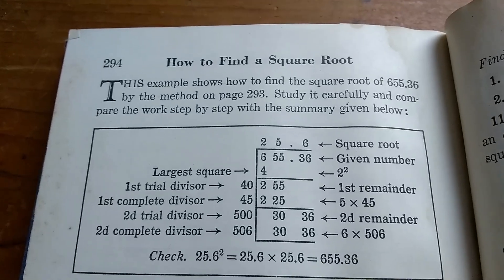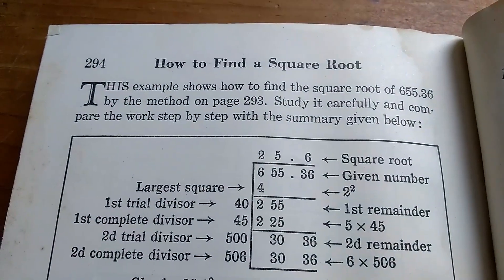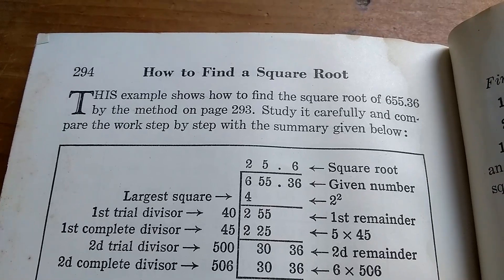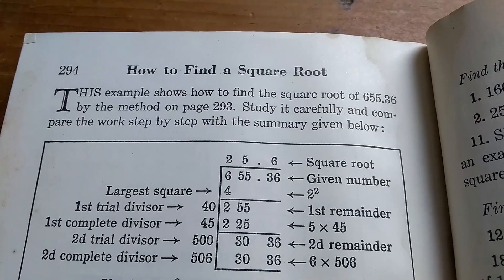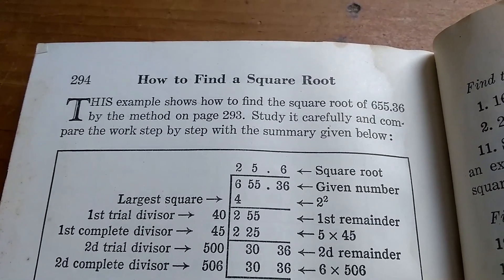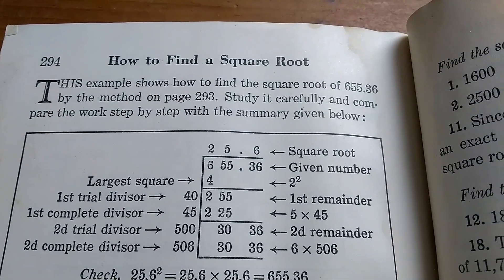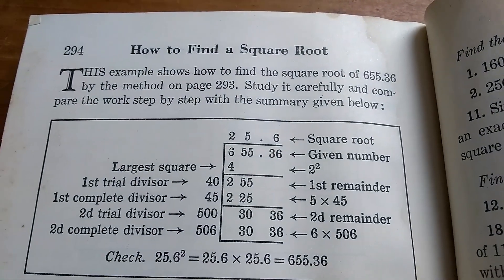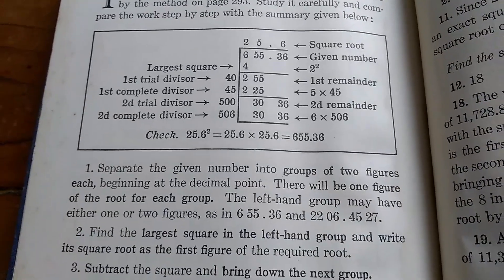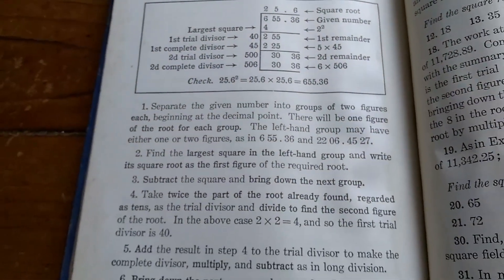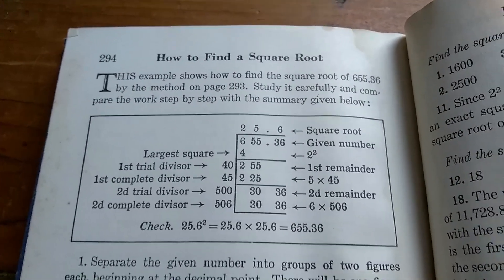This is really interesting — it actually gives you a method for finding the square root. It says 'This example shows how to find the square root of 655.36 by the method on page 293. Study it carefully and compare the work step by step with the summary given below.' It tells you how to find square roots without a calculator — that is a lost skill.